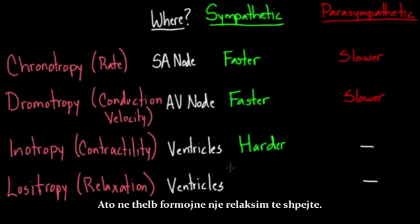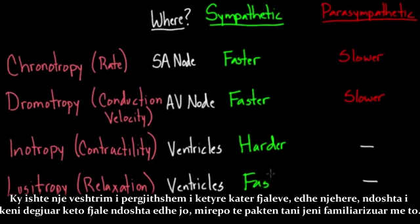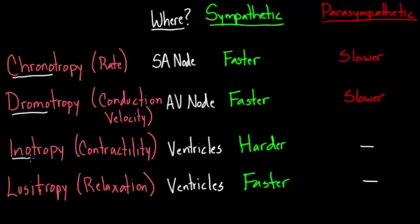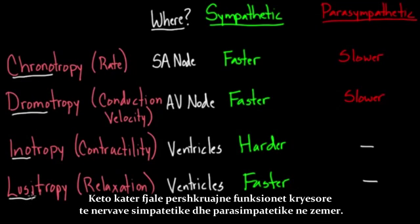So those are the quick overview of these four words. You may or may not hear all of them, but at least you're familiar with them: chrono, dromo, ino, and luci. These four words describe the major functions of the sympathetic and parasympathetic nerves on the heart.